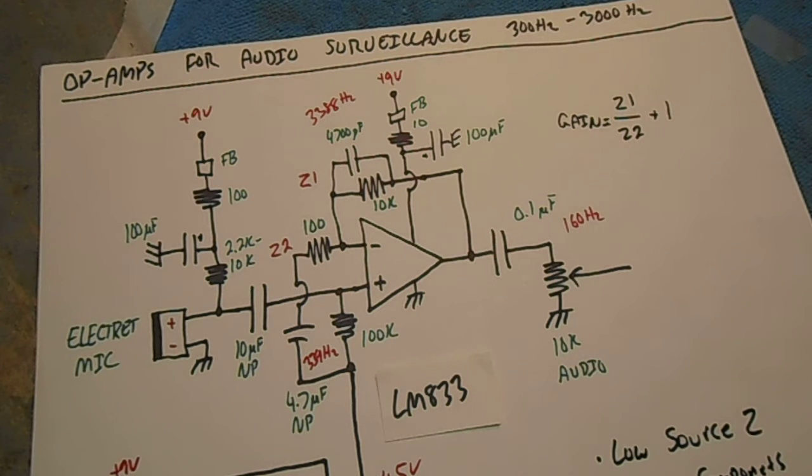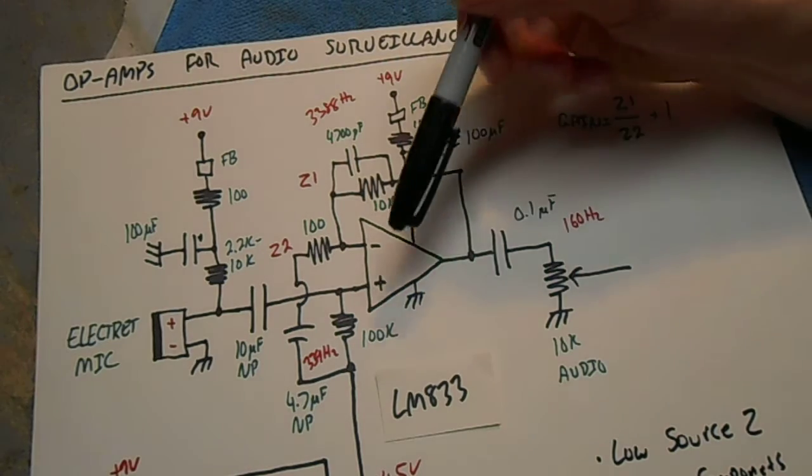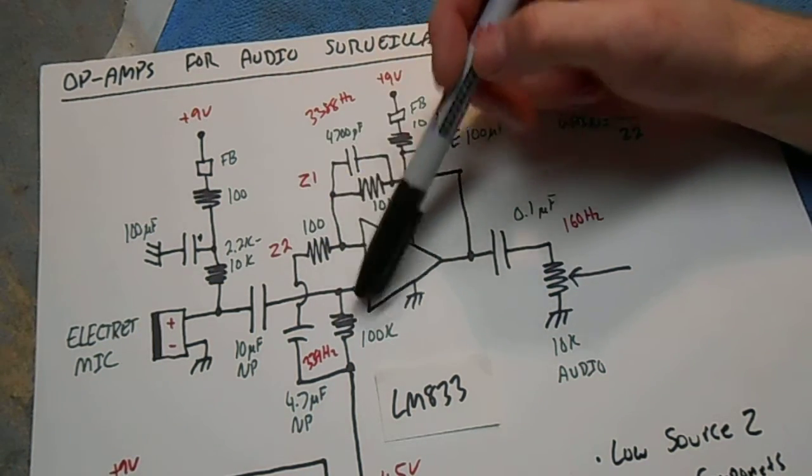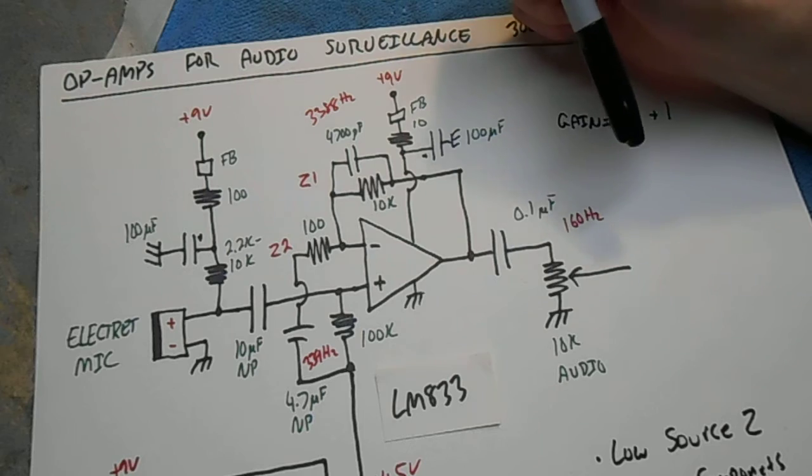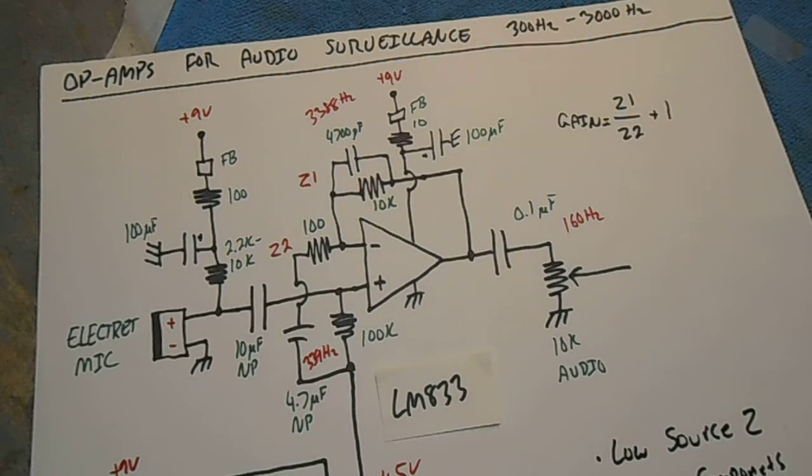Here's how to calculate the total input noise for an op-amp based audio amplifier. This is noise which is generated internally in the op-amp and its surrounding components. This noise gets amplified along with your incoming signal. There's three main types of noise sources.